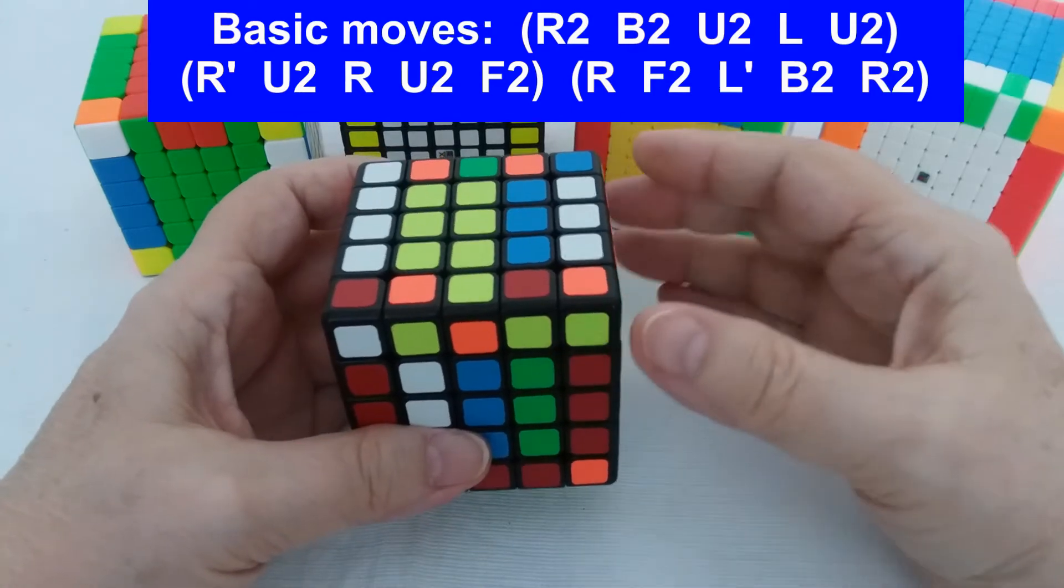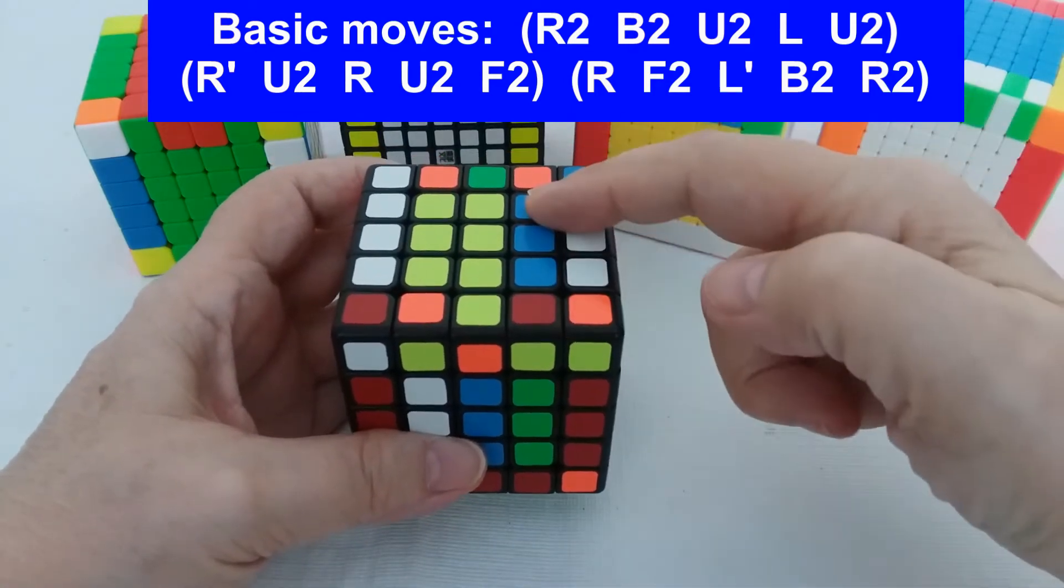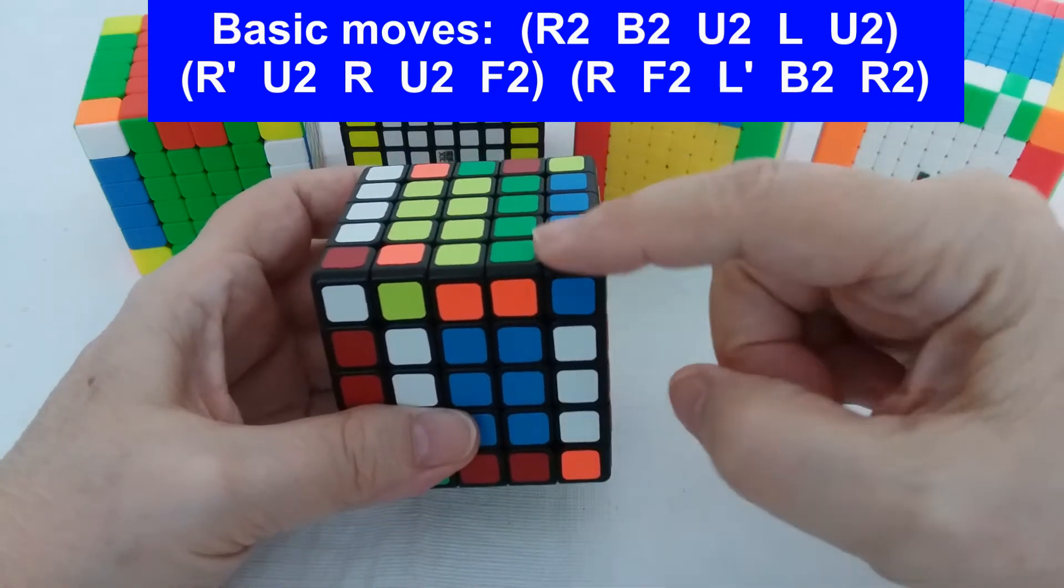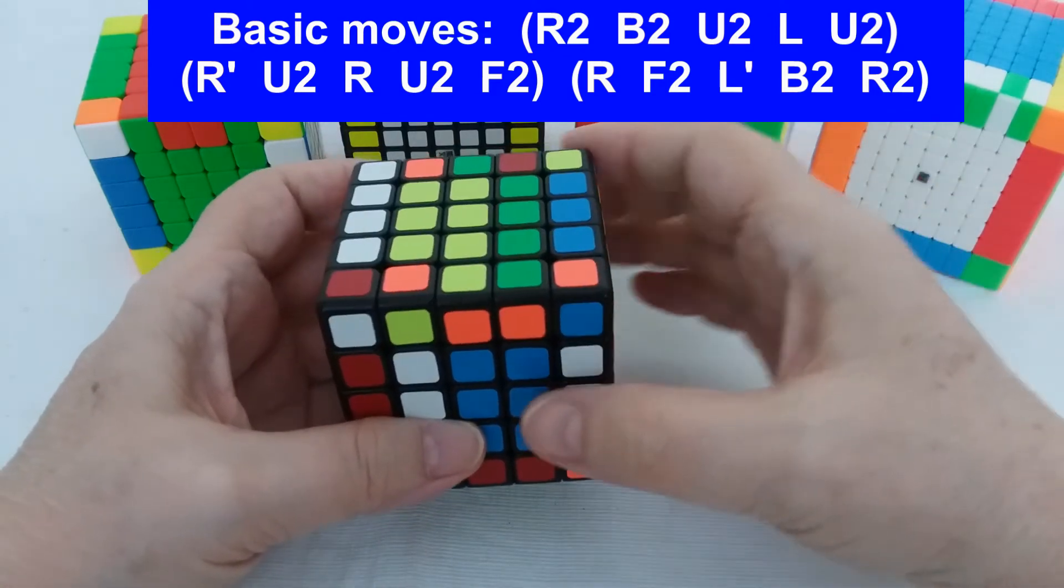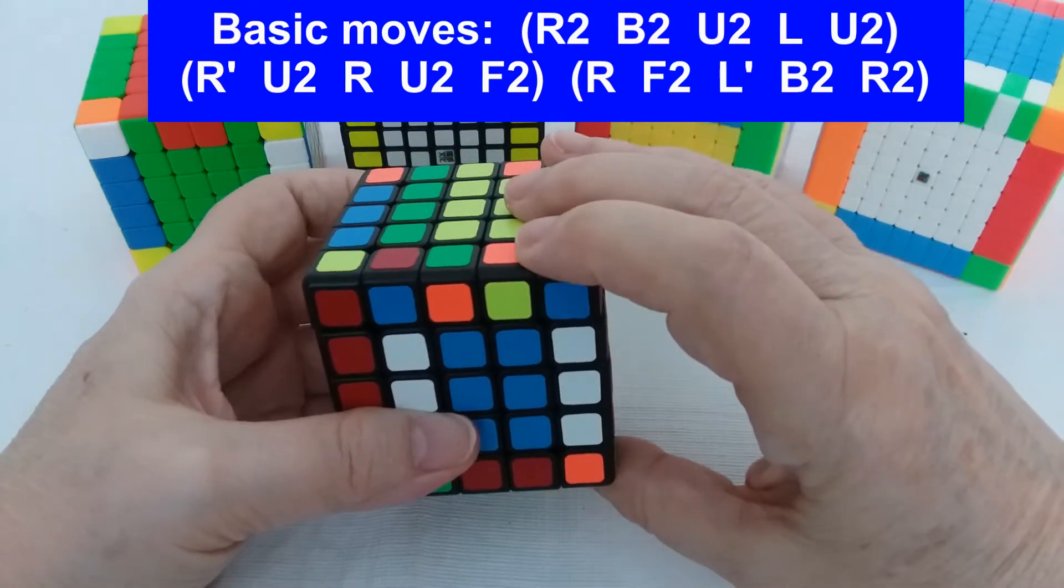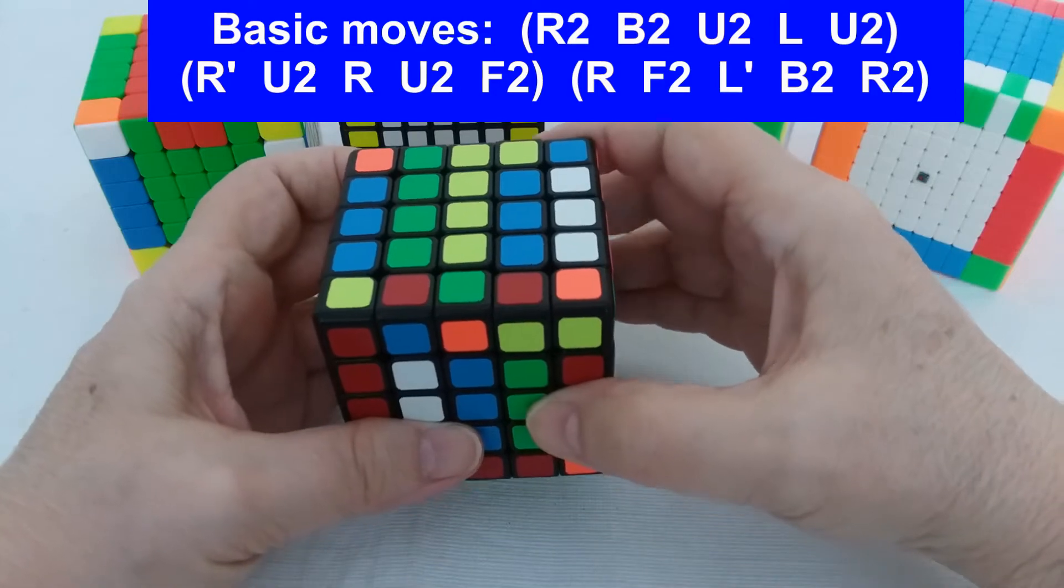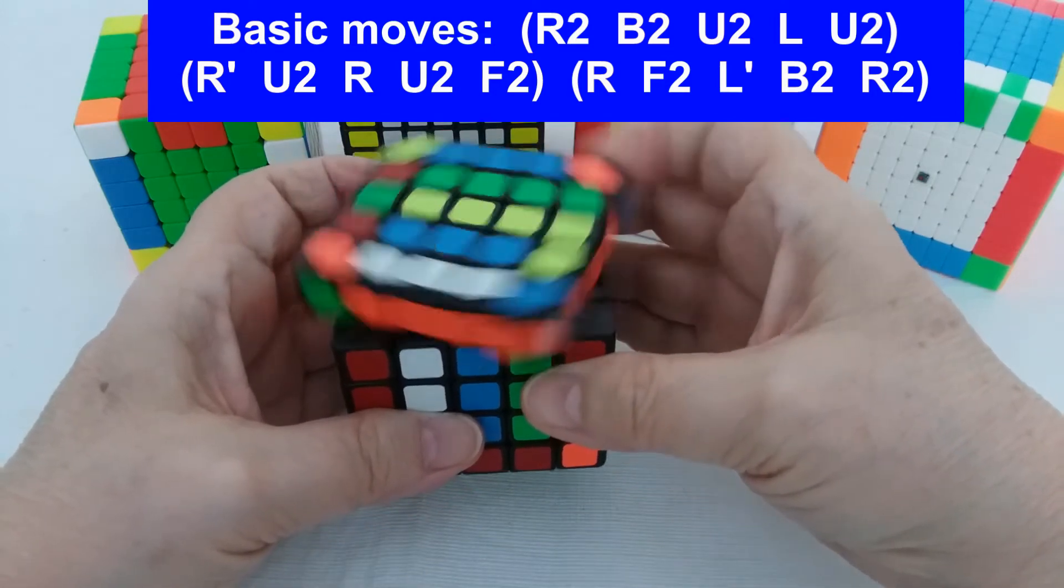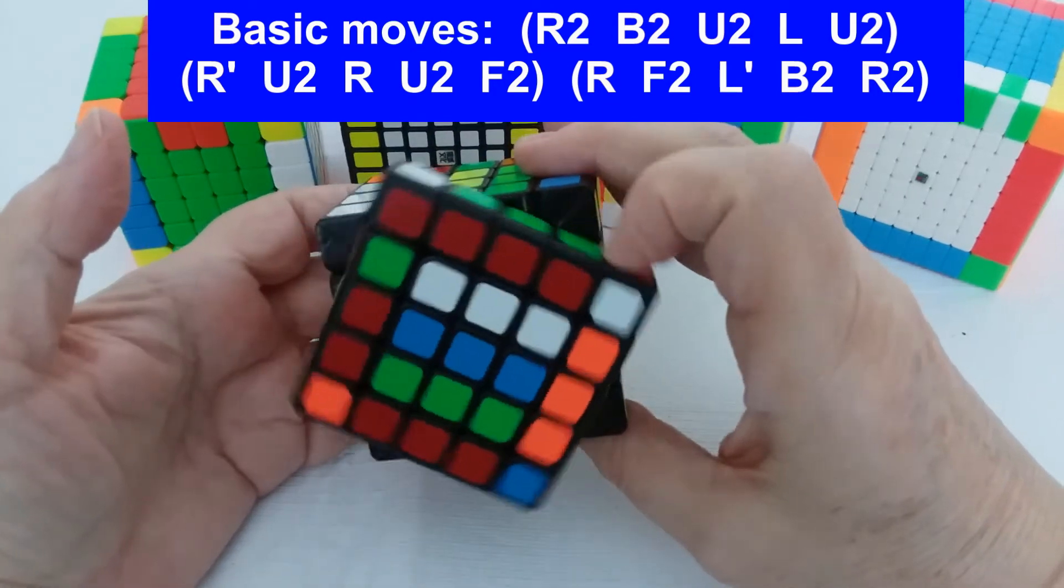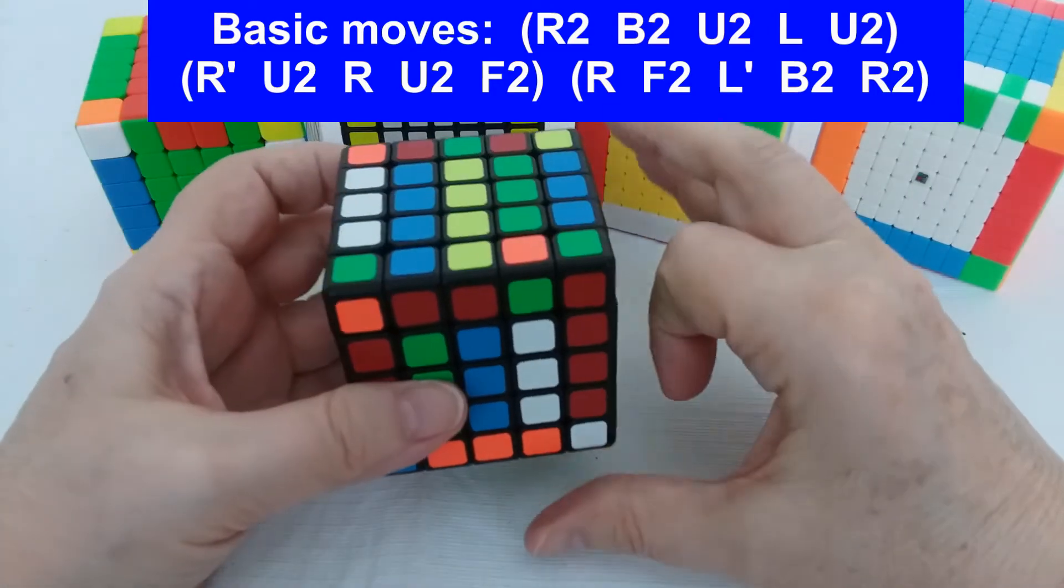The next five I think of as I say R2 me - it's really an R prime wide - and a U2. Then U2 R away, which is really an R wide, U2, and then an F2, which is just an F2. Those are those five.